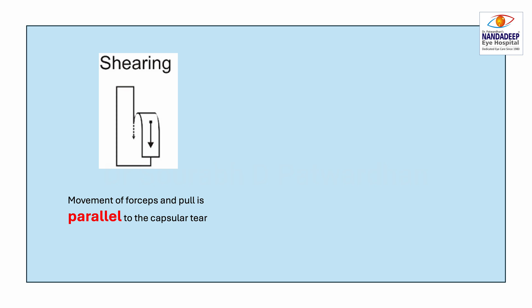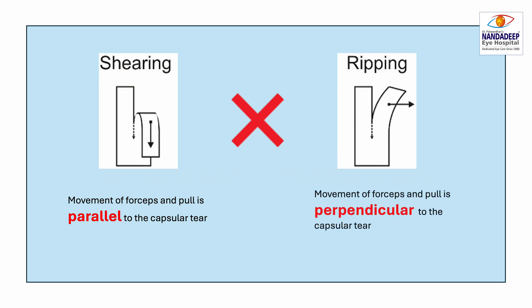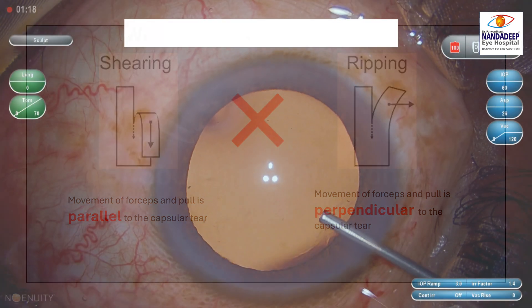As against that, in case of a ripping force, the movement of the forceps and the pull is perpendicular to the capsular tear. So the interplay between these two forces will determine the capsular axis.